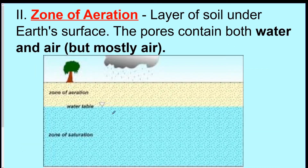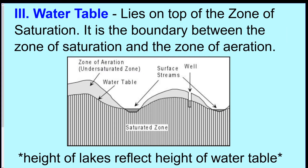The zone of aeration is underground but won't have much water — it's pretty much unsaturated dirt. It might have a little bit of water, but it's not full like the saturated zone. The water table is the line it's filled up to — the height of the water underground. Interestingly, the water table actually follows the shape of the land. If there's a hill, the water table underground also has a little hill; where the land goes down, the water table goes down too.